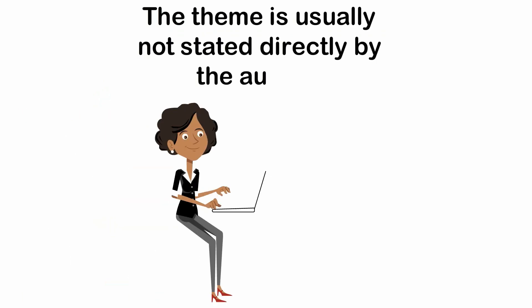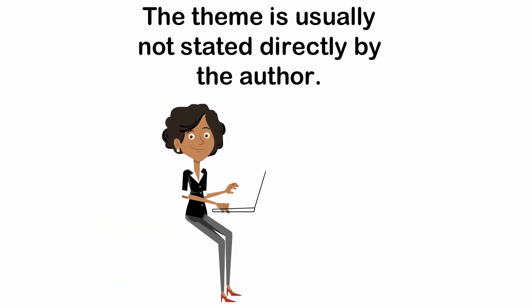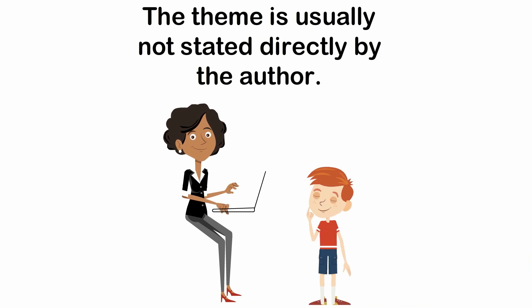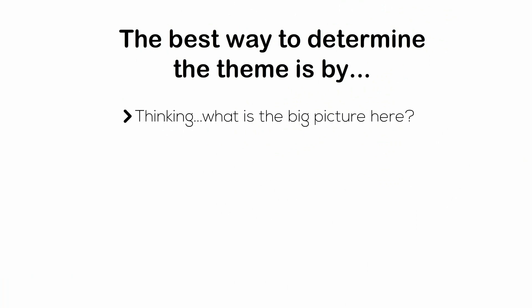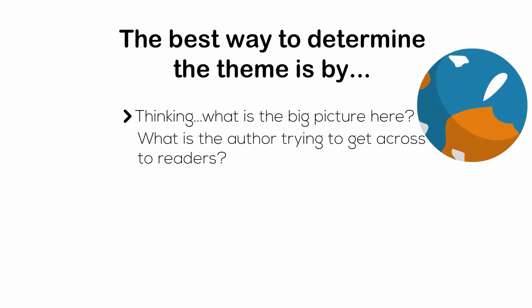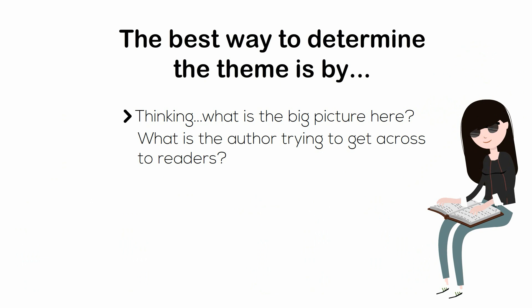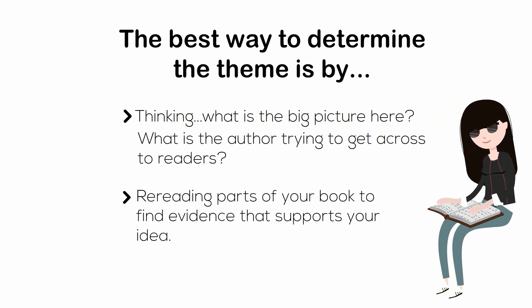The theme is usually not stated directly by the author. The best way to determine the theme is by thinking: what is the big picture here? What is the author trying to get across to readers? Rereading parts of your book to find evidence that supports your idea.